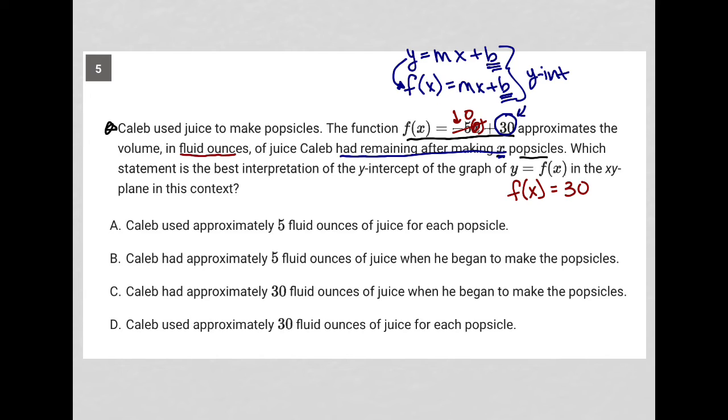So let's find the answer that matches what we just figured out. Choice A, Caleb used approximately 5 fluid ounces of juice for each popsicle. That is true, but that is not the interpretation of 30, right? So that's why A is gone. Choice B, Caleb had approximately 5 fluid ounces.